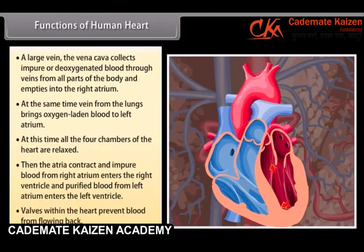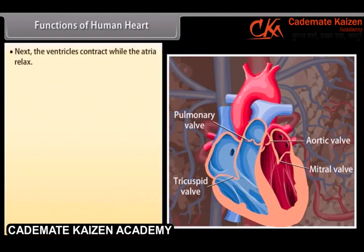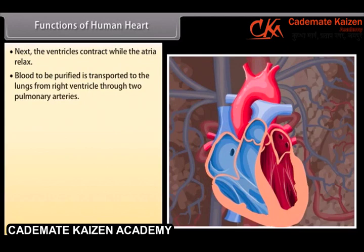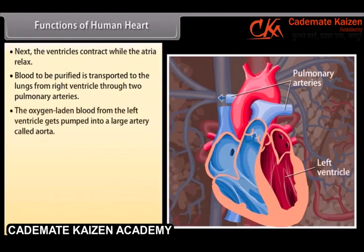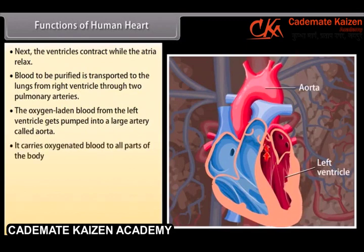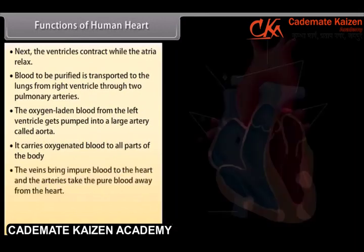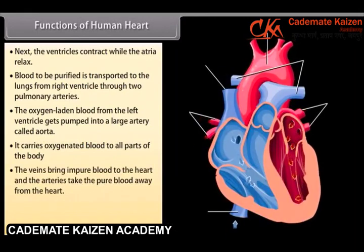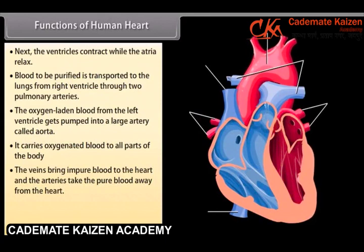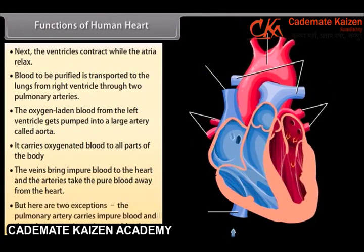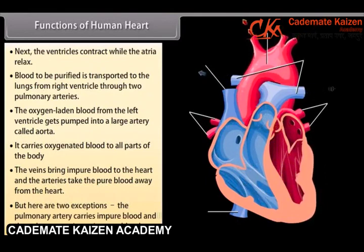Valves within the heart prevent blood from flowing back. Next, the ventricles contract while the atria relax. Blood to be purified is transported to the lungs from the right ventricle through two pulmonary arteries. The oxygen-laden blood from the left ventricle gets pumped into a large artery called the aorta. It carries oxygenated blood to all parts of the body. The veins bring impure blood to the heart and the arteries take the pure blood away from the heart. But there are two exceptions: the pulmonary artery carries impure blood and the pulmonary vein carries pure blood.